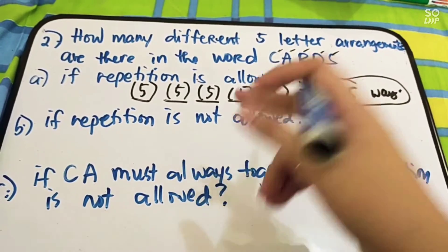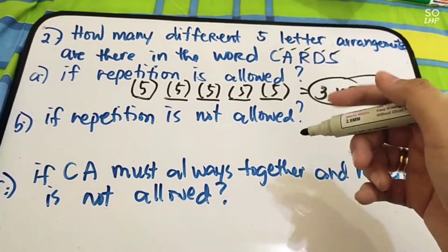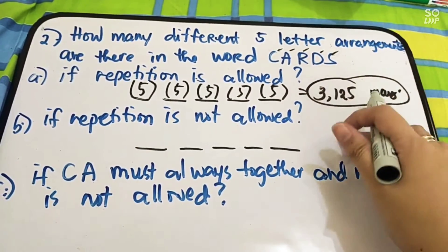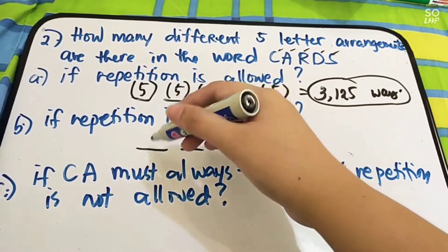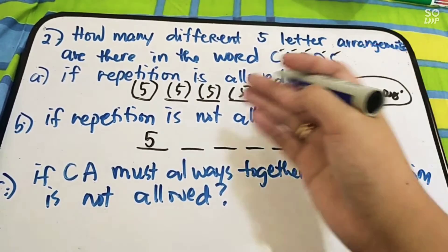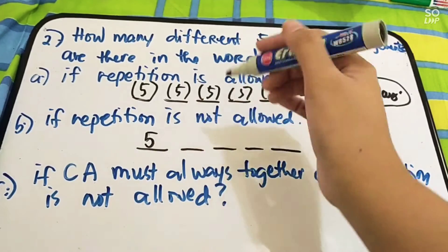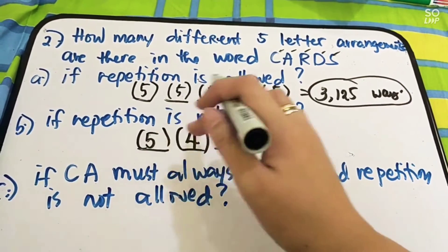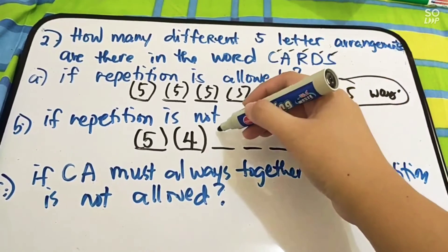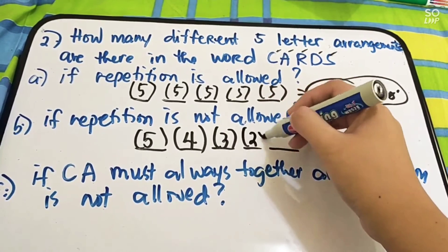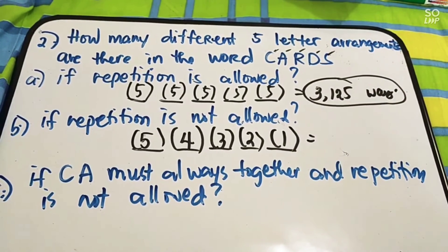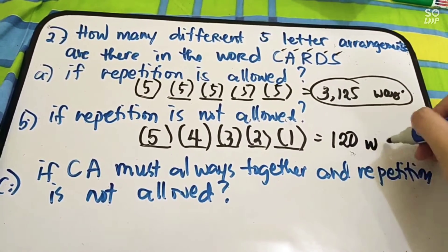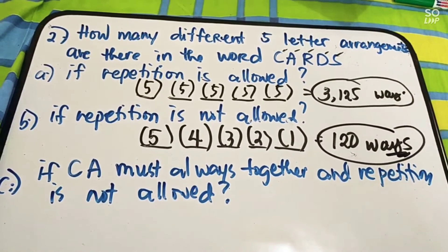What if we have letter B — repetition is not allowed? We have five letters used in five positions. Since repetition is not allowed, sa una, gagamit ka ng five objects. Since nailagay mo na yung isang object, ang pwede na lang sa susunod is four, then three, then two, then one. Just multiply: five times four times three times two times one. The answer is 120 ways.